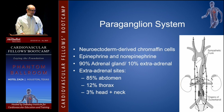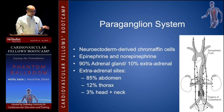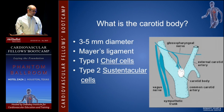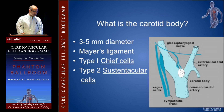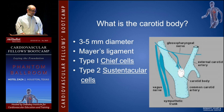In the extra-adrenal sites, 85% are in the abdomen, 12% in the thorax, and then 3% in the head and neck. Out of those 3%, the most common are carotid body tumors. The carotid body is a little 3 to 5 millimeter diameter structure present in the carotid bifurcation. It has two types of cells: chief cells and sustentacular cells.